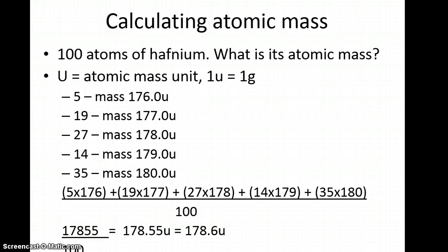The calculation is (5×176 + 19×177 + 27×178 + 14×179 + 35×180) ÷ 100 = 178.55u, or 178.6u with significant digits. If you're given the total number of atoms of a certain element, this is how you find the average atomic mass of all the isotopes.